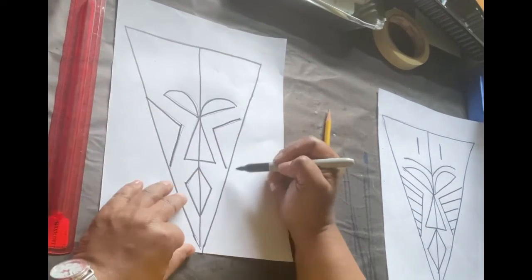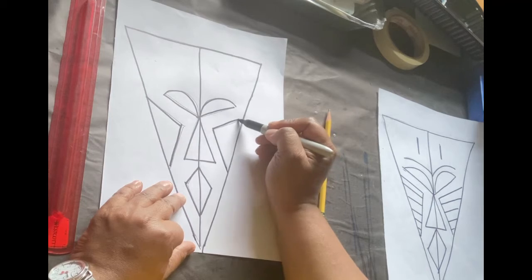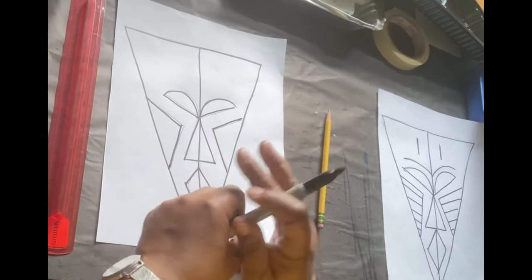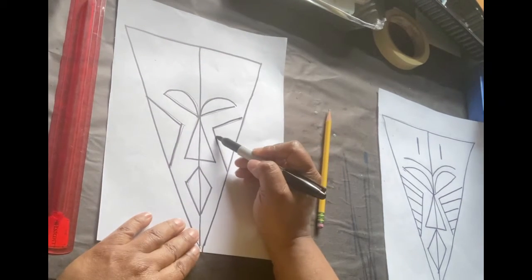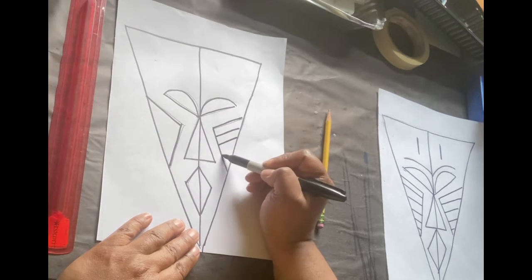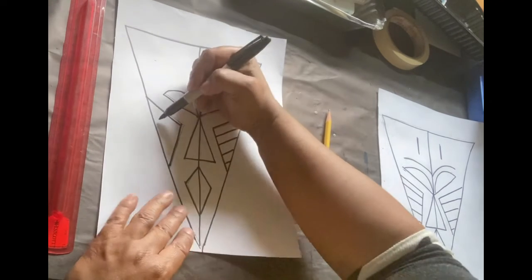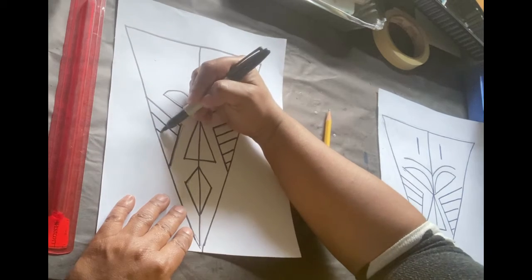And we're going to put a pattern inside of that space. So let's create a pattern of diagonal lines. You can really create a pattern of whatever you would like, but I'm going to create a pattern of diagonal lines.